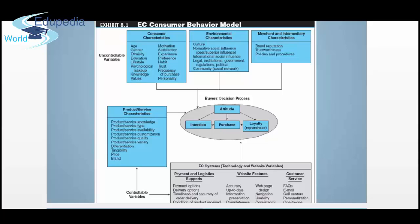Let's go to the uncontrollable variables. We have consumer characteristics: age, gender, ethnicity, education, lifestyle, psychological makeup, knowledge, values, motivation, satisfaction, experience, preference, habit, trust, frequency of purchase, and personality. Then environmental characteristics like culture, normative social influence, peer or superior influence, informational social influence, legal, institutional, government regulations, political, community, and social network. Then merchant and intermediary characteristics like brand reputation, trustworthiness, and policies and procedures.